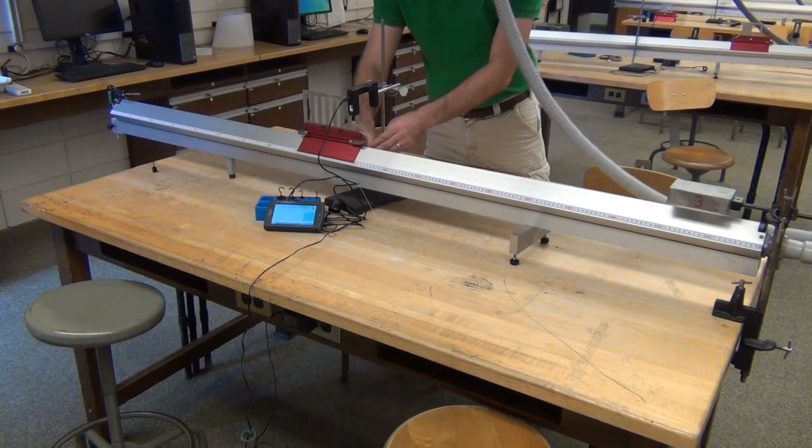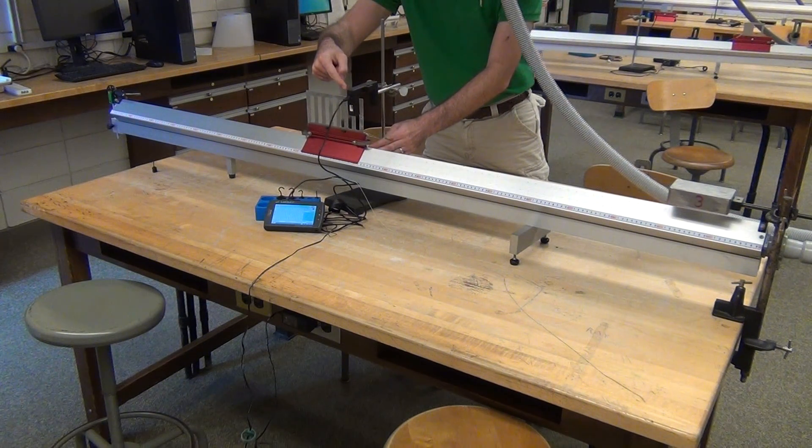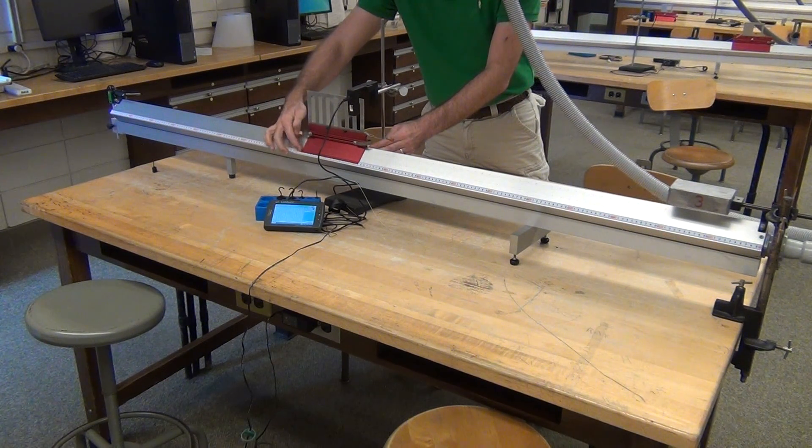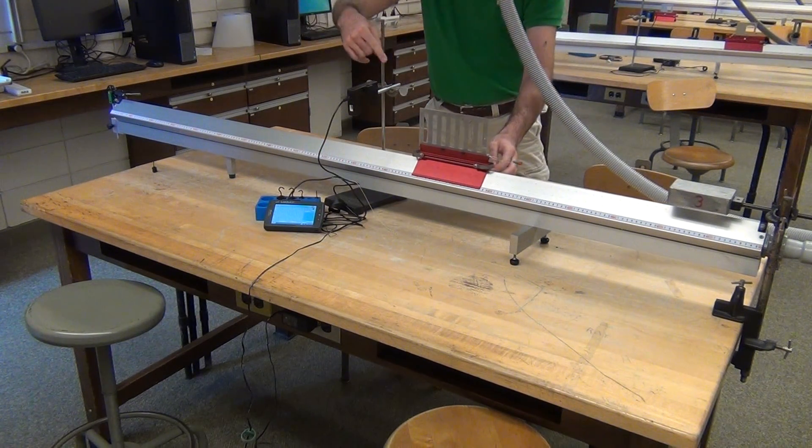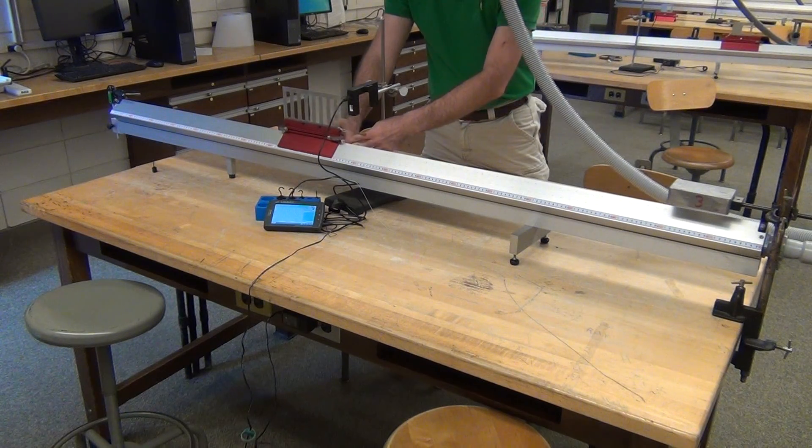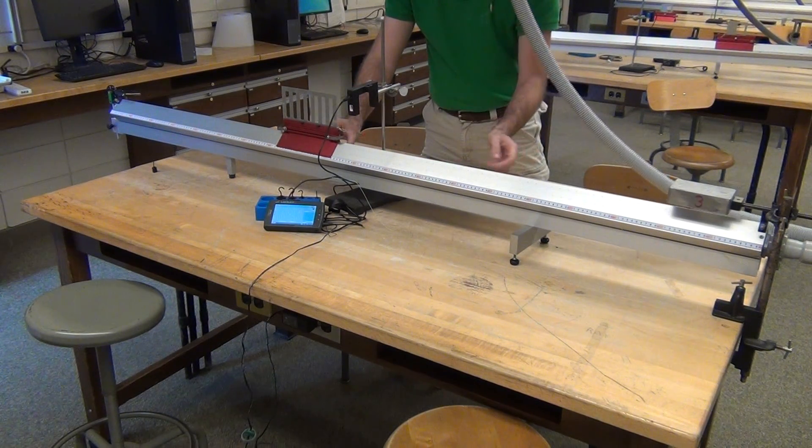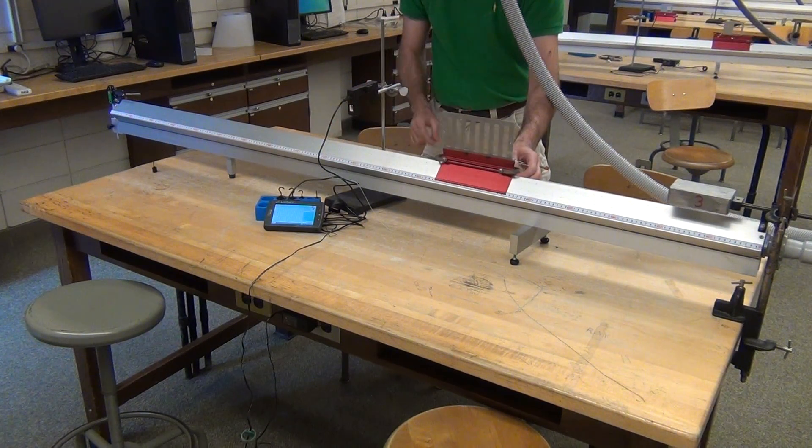Measure the position on the photogate as you normally have before, looking where the light is just blocked and measuring that rear side. And you'll get one data run where the torsional spring pulls the cart through, catching it on the far side.